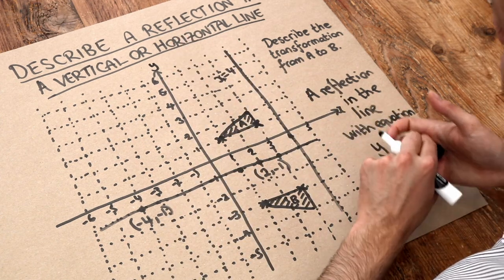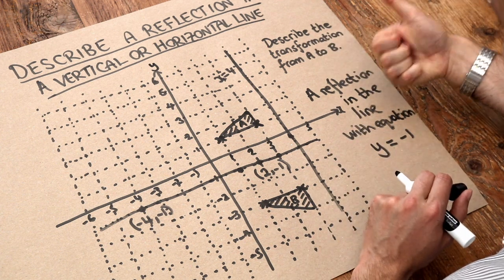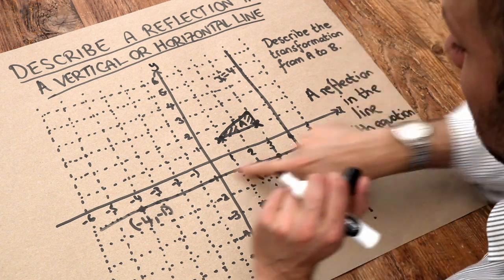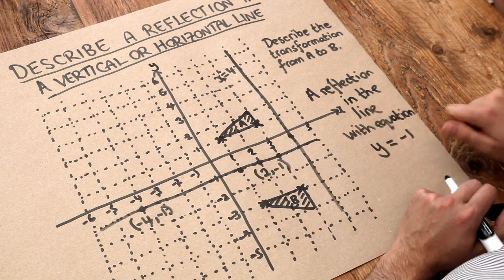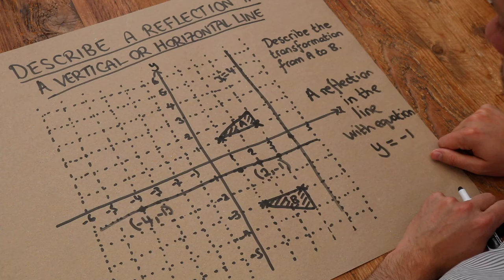So just to summarize, if you're describing this transformation, you need to say it's a reflection, and secondly, you need to identify the line of reflection and give its equation. And there is the skill.